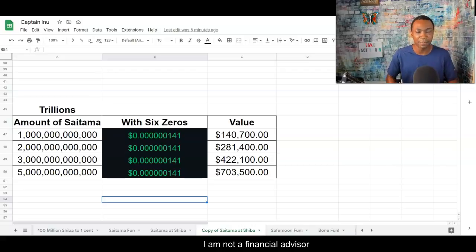Now with one trillion Saitama. One zero off the current price. Just one. $140,000. Now think about taking some profit here. Just think about it. Even if it's half of that, that's $70,000. That's just one zero with the 141. That's something to think about.